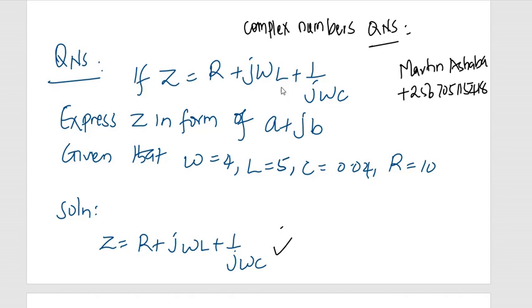In this discussion, we are looking at a complex number question which says Z is equal to R plus jWL plus 1 over jWC. Express Z in the form of A plus jB.